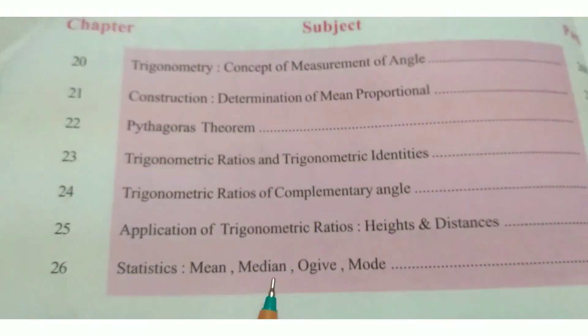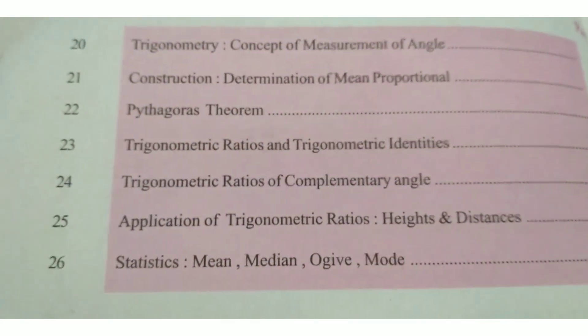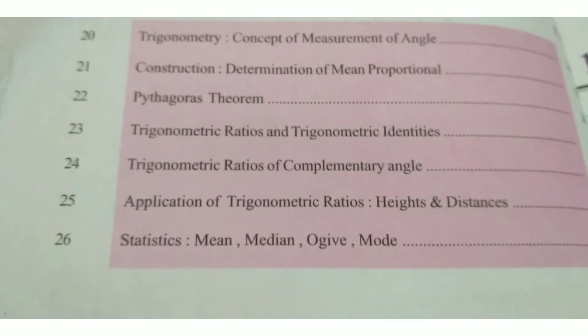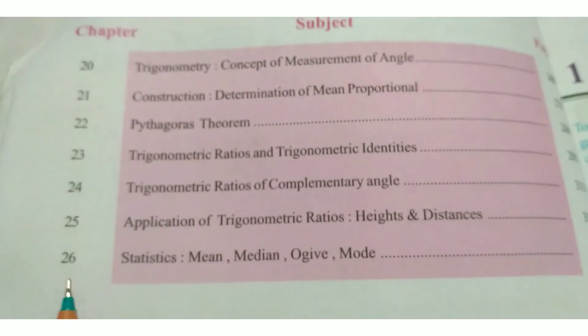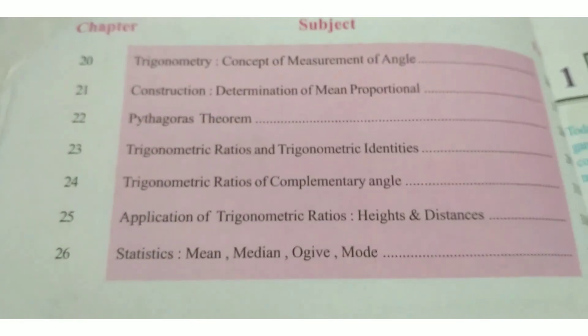Chapter 26: Statistics — Mean, Median, Ogive and Mode. Total 26 Chapters.